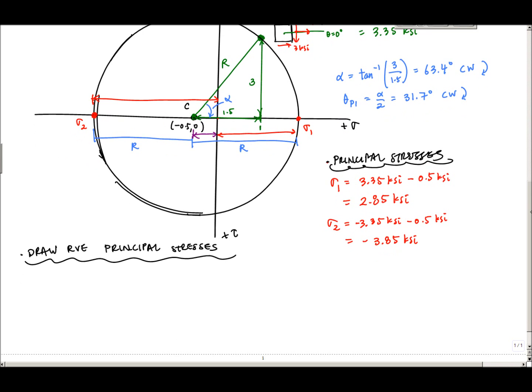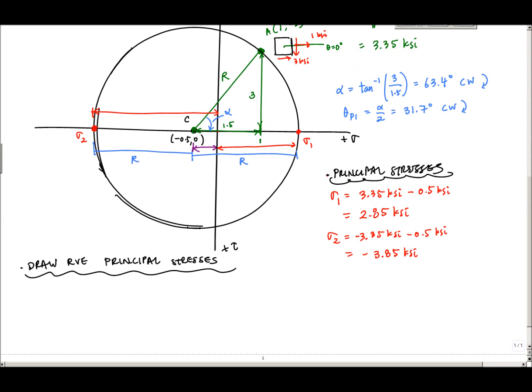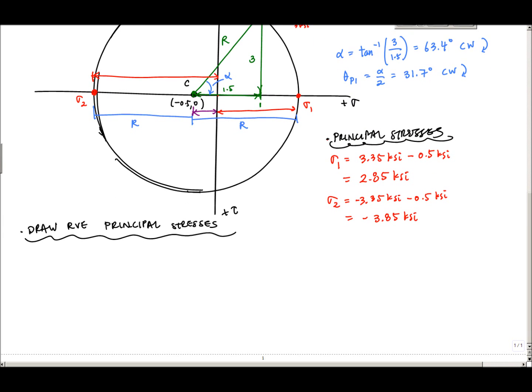In order to draw my representative volume element, I always start with the horizontal line first. That represents theta equals 0, it's my reference. And then I have to rotate 31.7 degrees, so then I draw the line at 31.7 degrees. And this will be 31.7 degrees.